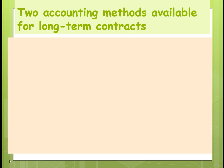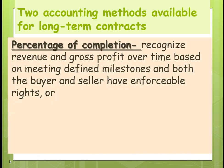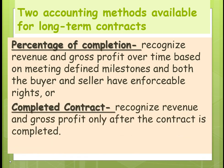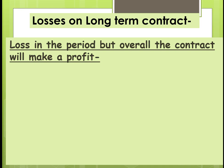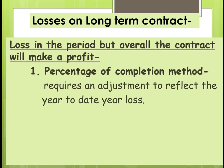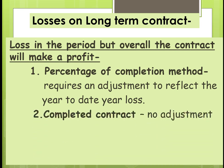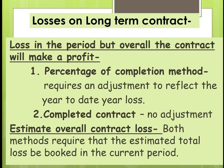There are two accounting methods for long-term contracts. Under percentage of completion, we recognize revenue and gross profit over time based on meeting defined milestones, and both the buyer and seller have enforceable rights. Under completed contract, we recognize revenue and gross profit only after the contract is completed. For a loss in a period where the overall contract will still make a profit, percentage of completion requires an adjustment to reflect the year-to-date loss, while completed contract does nothing until the contract is complete. If there is an estimated overall contract loss, both methods require that the total estimated loss be booked in the current period.